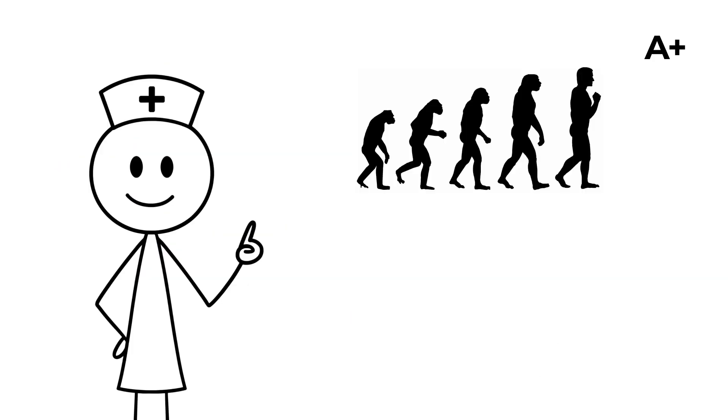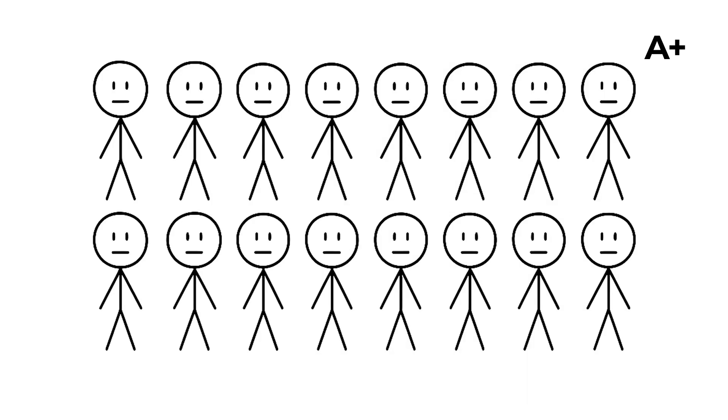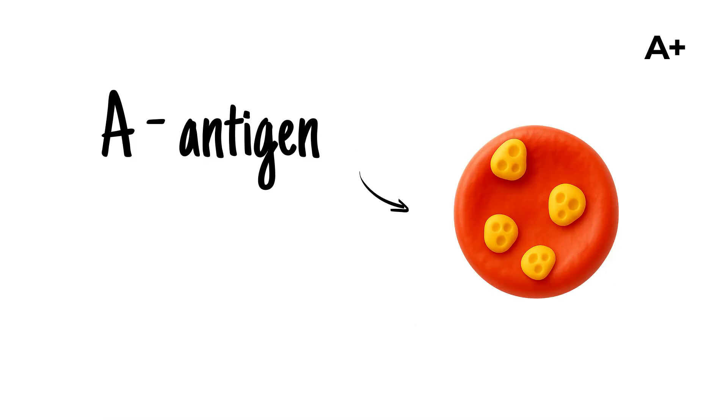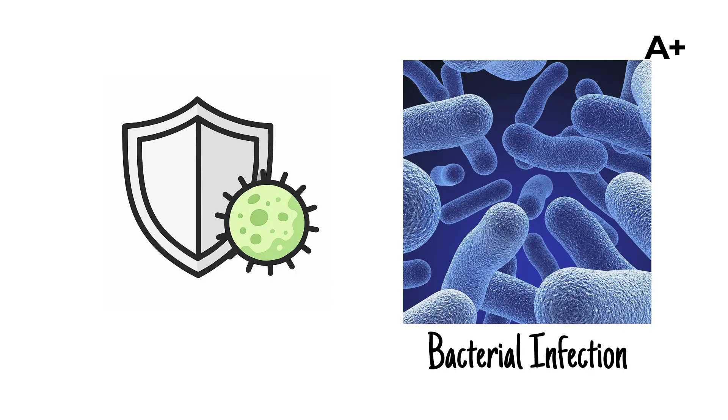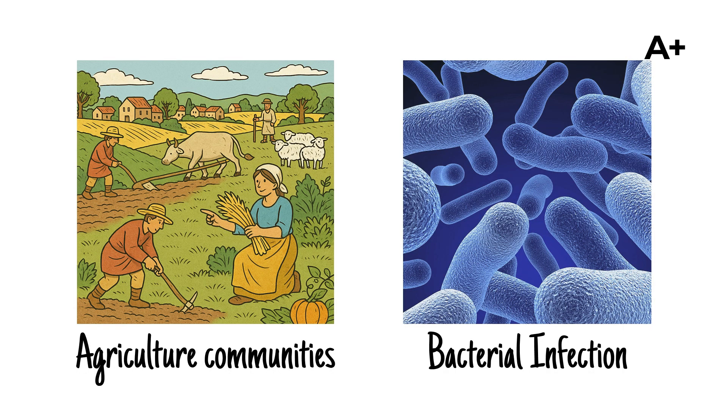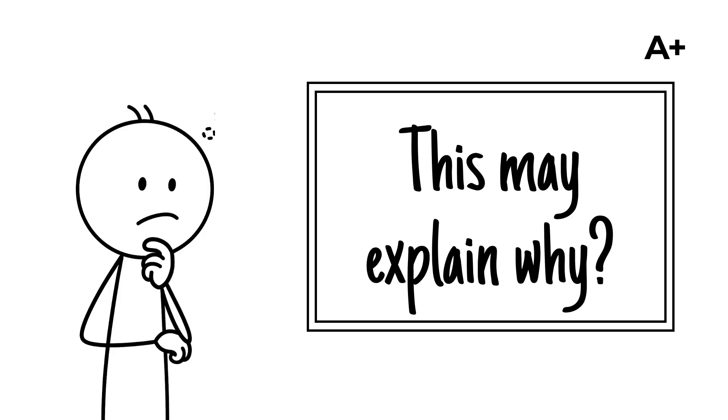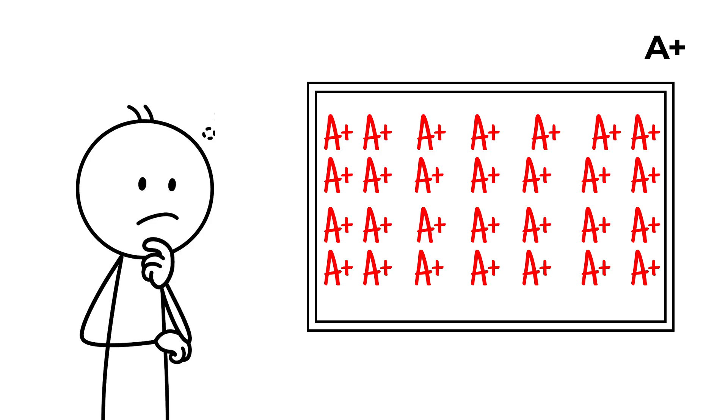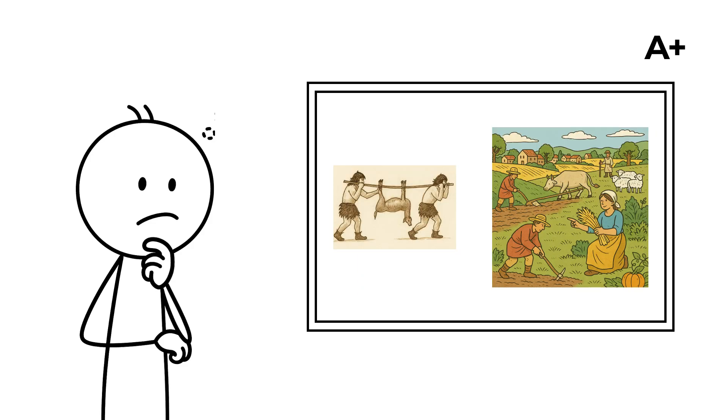Beyond its clinical role, type A carries evolutionary and immunological traits that have shaped how populations adapted over time. For example, the A antigen has been linked to a stronger immune response against certain bacterial infections, particularly those that spread in dense agricultural settlements where hygiene was often a challenge. This may explain why the frequency of type A increased as humans transitioned from hunter-gatherer societies to settled farming civilizations.